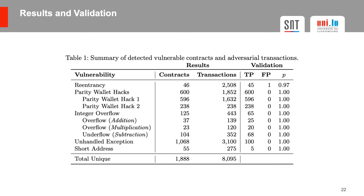We ran HORUS on those 300,000 transactions and generated roughly 700 GB of datalog facts. We found 1,888 vulnerable contracts in 8,095 adversarial transactions. The majority of these contracts and transactions are related to unhandled exceptions. We validated our results by comparing our findings to those of previous works or by manually verifying the source code whenever it was available. HORUS achieves on average a very high precision of 99.54% with only one false positive.